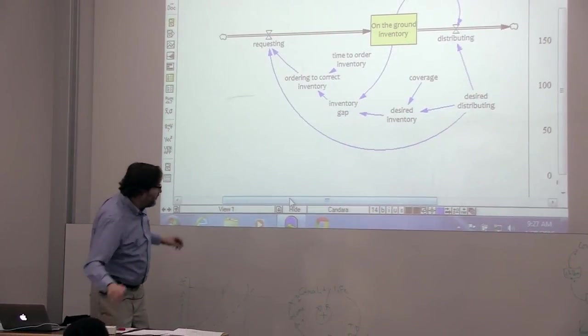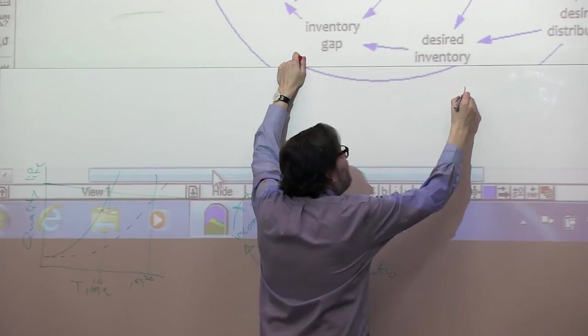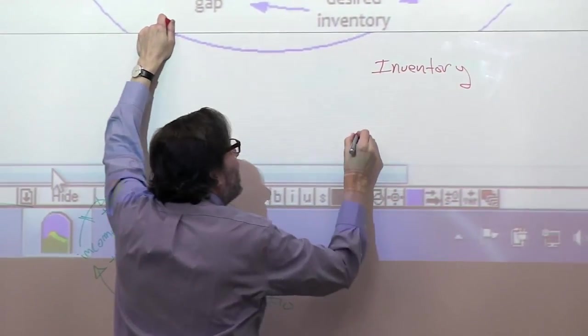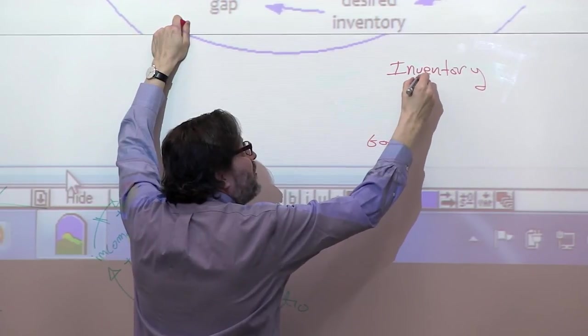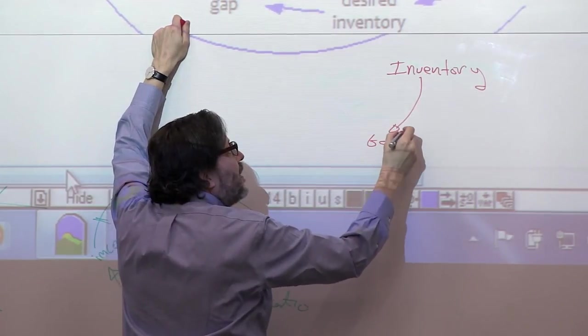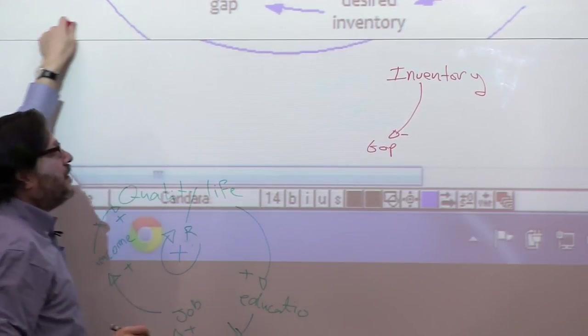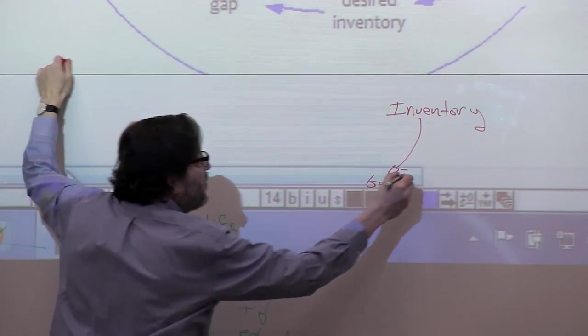If we were to draw it the way we have usually been drawing it, it would look like this. So we have inventory. We have the gap. If inventory is low, the gap is high, right? So that's a minus or an opposite.